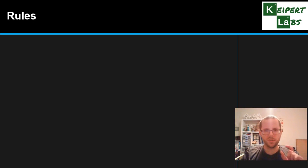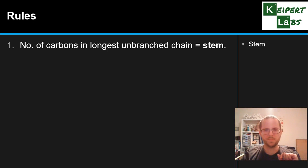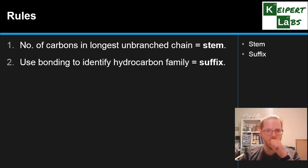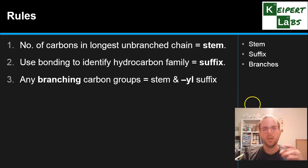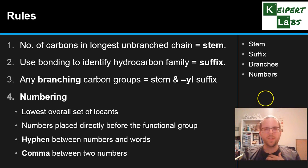All right, so let's talk through the rules a bit more specifically. Okay, so first we identify the number of carbons in the longest unbranched chain and we assign a stem. Next, we look at the bonding to identify what hydrocarbon family that we have. And then put in the appropriate suffix. Is it an alkane, alkene, so on. We look and see if there's any branching carbon groups. We give them the appropriate stem and the yl suffix and attach them to the rest of the chain in our name.